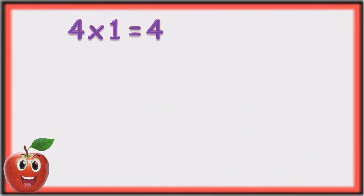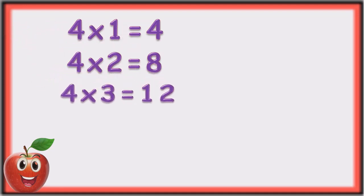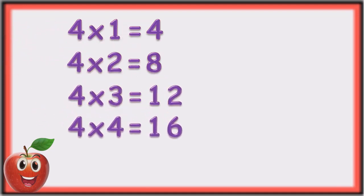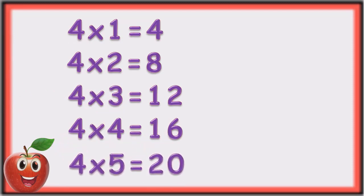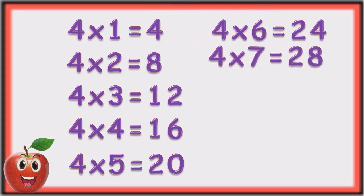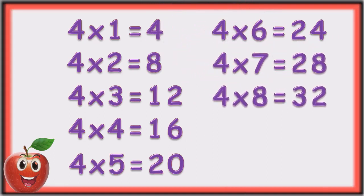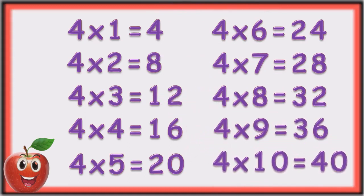Four ones are four. Four twos are eight. Four threes are twelve. Four fours are sixteen. Four fives are twenty. Four sixes are twenty-four. Four sevens are twenty-eight. Four eights are thirty-two. Four nines are thirty-six. Four tens are forty.